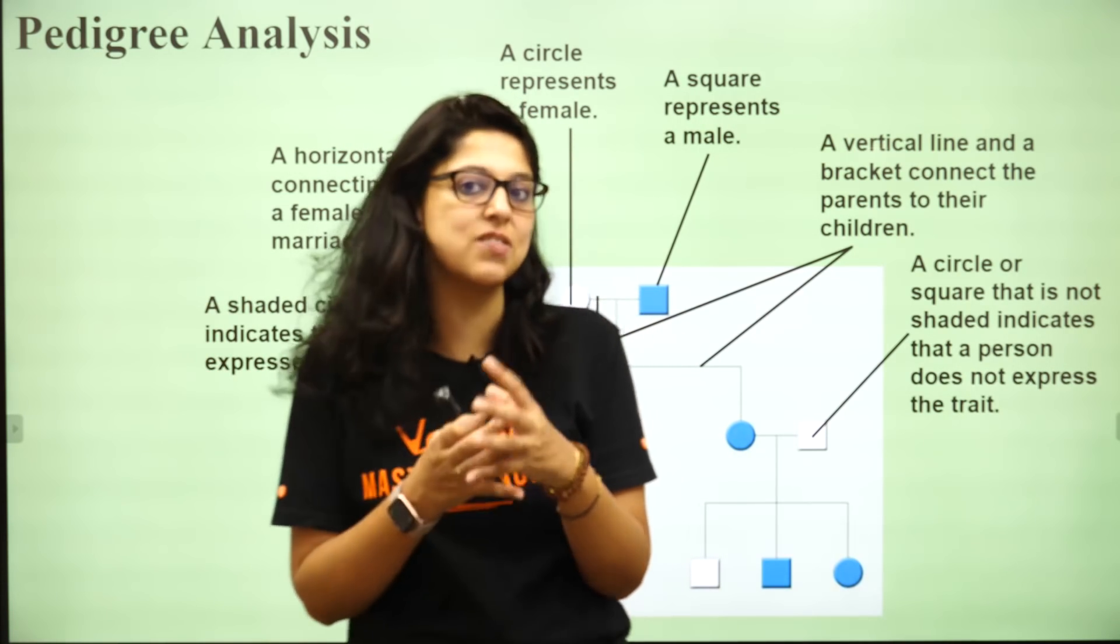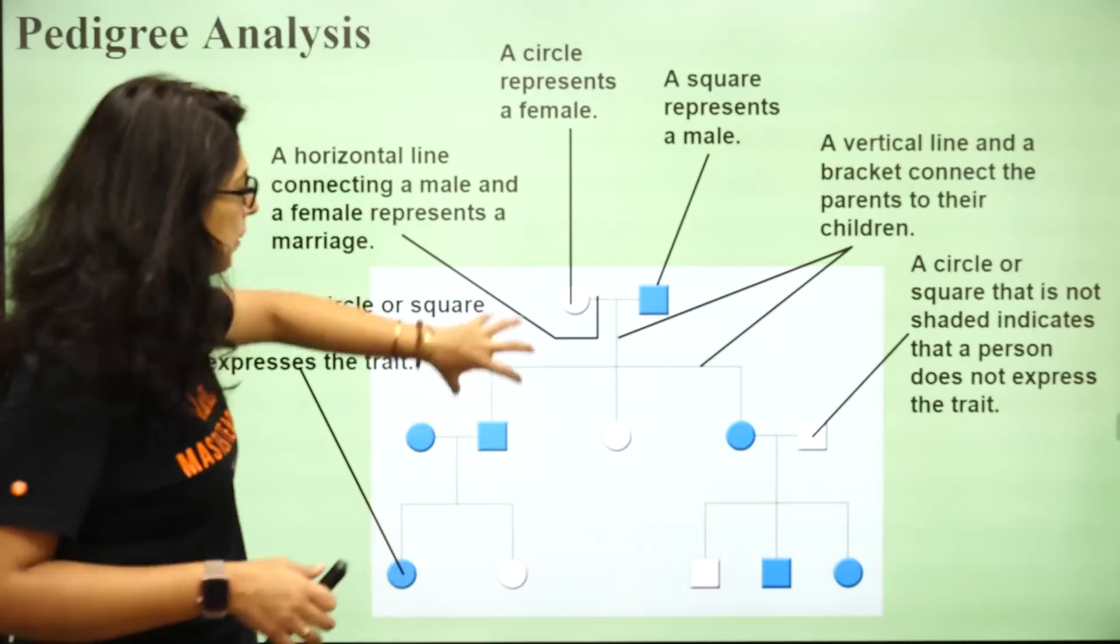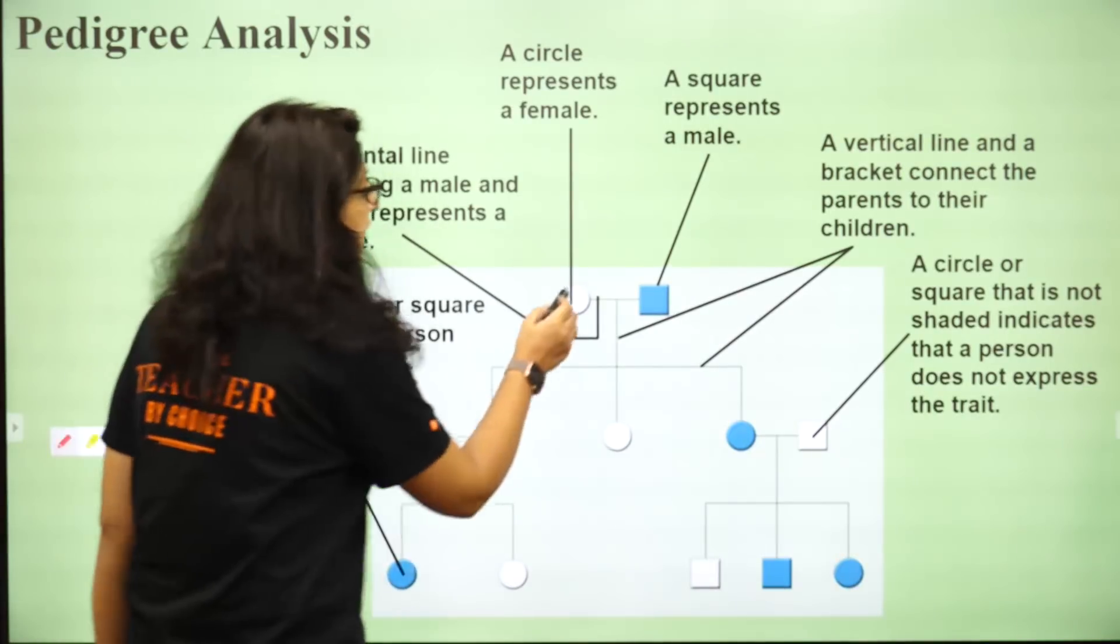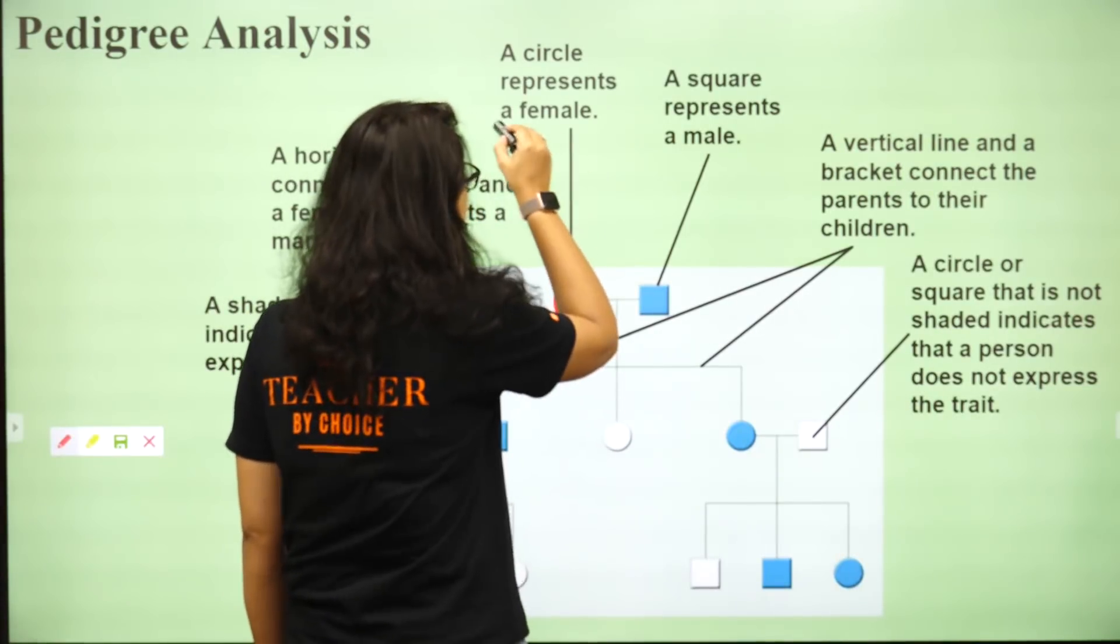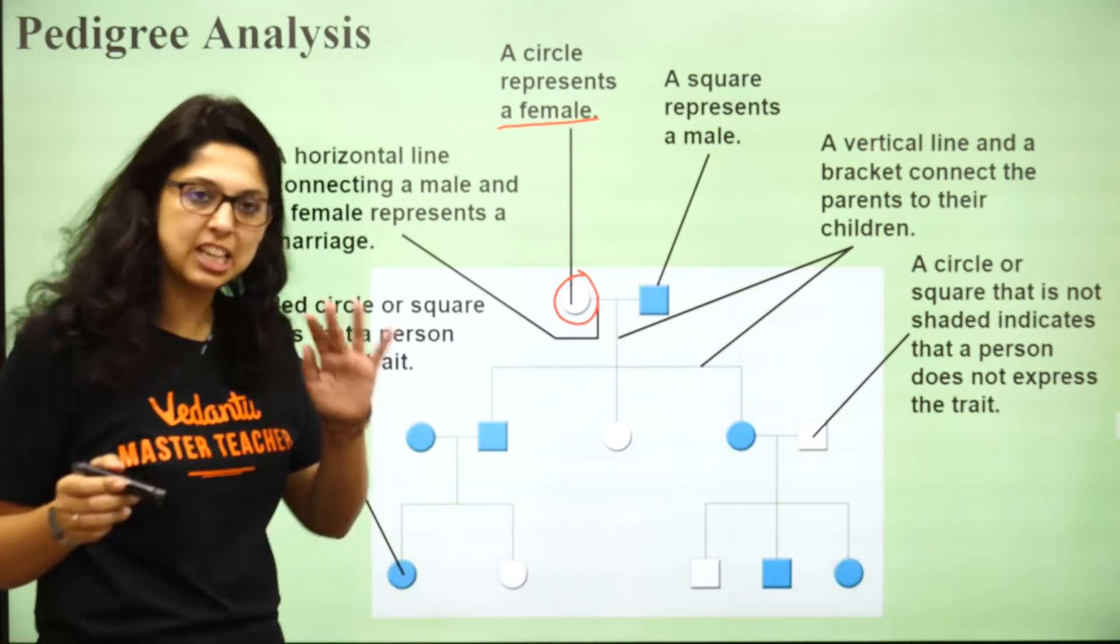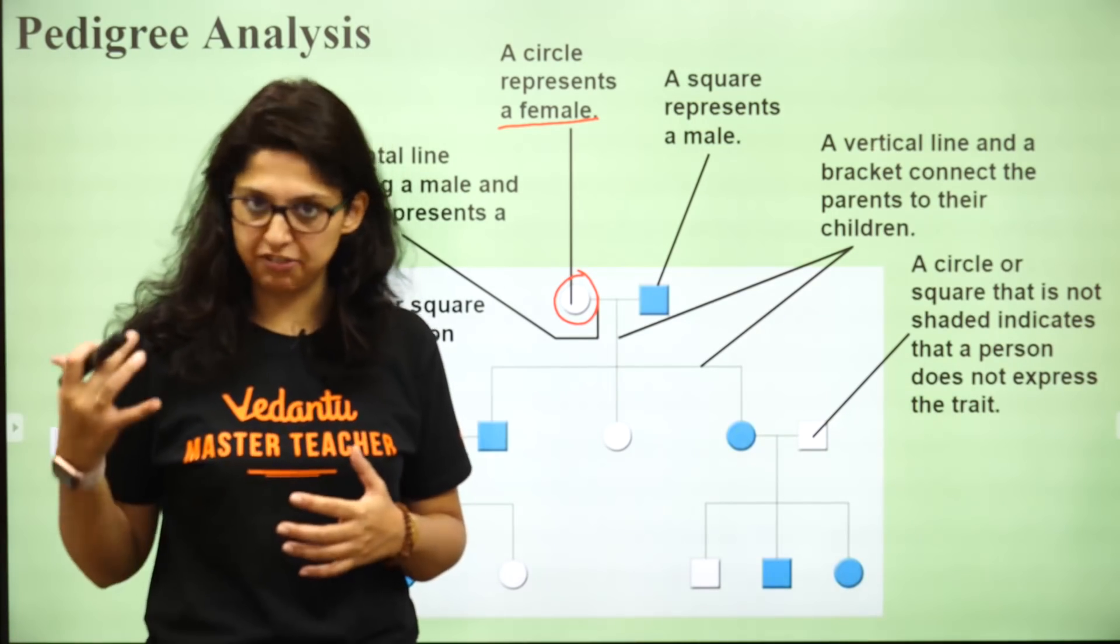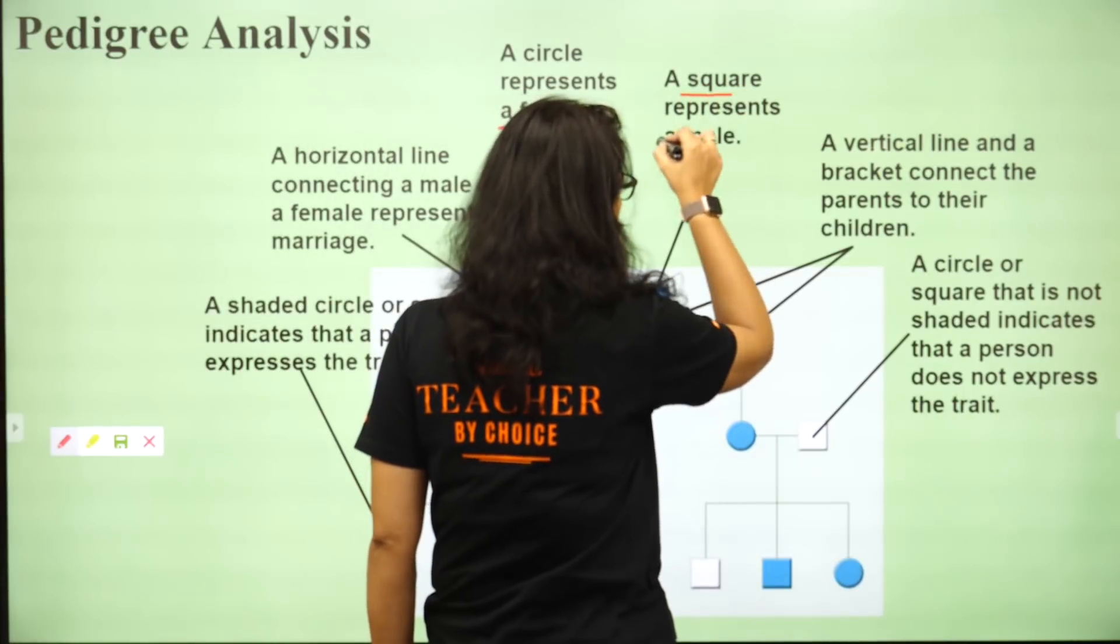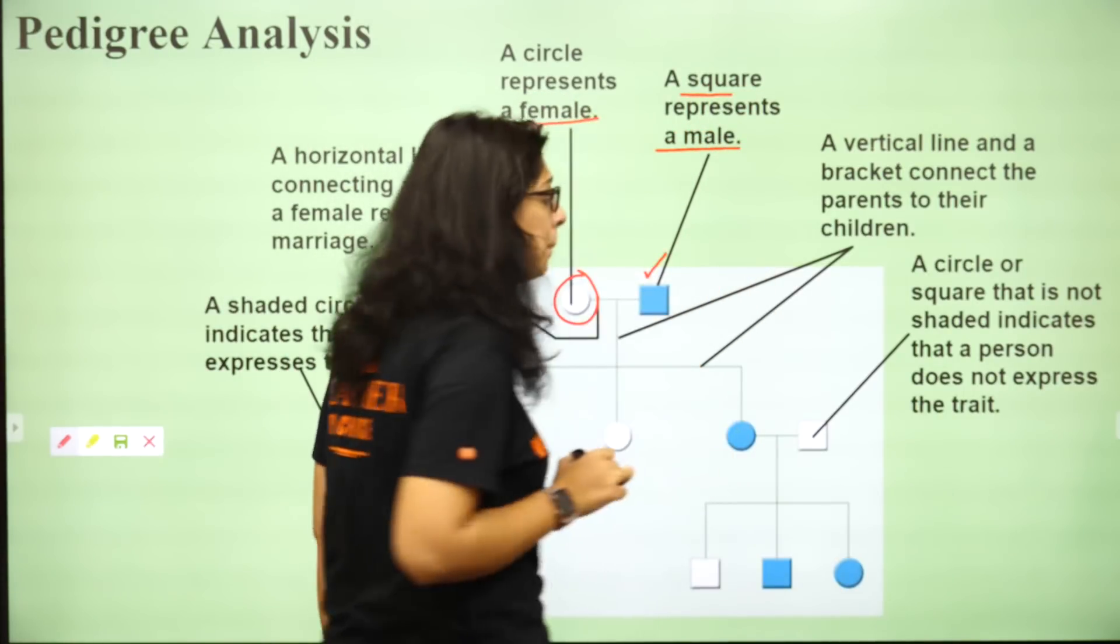Jab bhi hum ek circle banaate hai kabhi bhi on the pedigree analysis, it always represents a female. If the circle is colored that means the female is affected. If it's a blank circle that means the female is not affected. If we make a square that always represents a male.